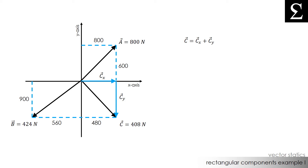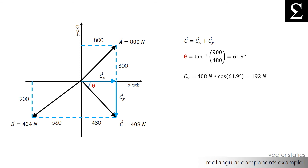Let's move on to force C. We can see graphically that the components of C, CX and CY, are acting to the right and to the bottom respectively. This means we will have a positive rectangular component in the X direction and a negative rectangular component in the Y direction. The first thing we need to do is calculate theta, which is the tangent inverse of 900 divided by 480, equal to about 61.9 degrees. CX is equal to 408 newtons times the cosine of 61.9 degrees, which equals 192 newtons. CY is equal to 408 newtons times the sine of 61.9 degrees, which equals 360 newtons.